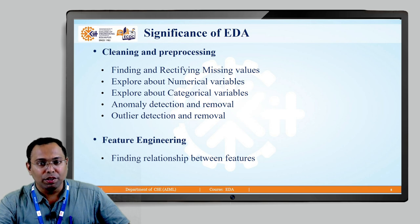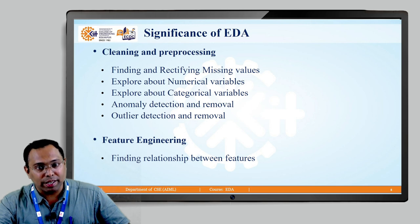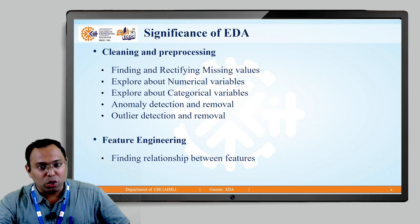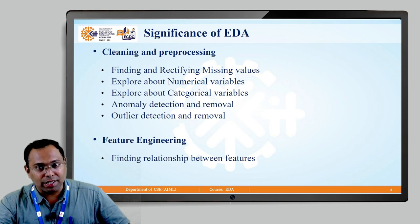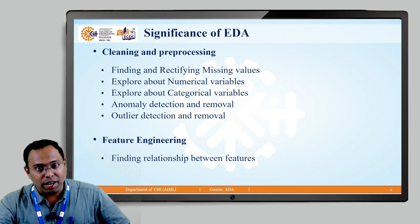Point number 2 in the significance of EDA is feature engineering. This is the second significant need of exploratory data analysis. In feature engineering, we precisely talk about finding the relationship between the features. We have multiple features, and these features are either directly or indirectly proportional to each other. Finding the relationship between these features is another reason why we need exploratory data analysis.